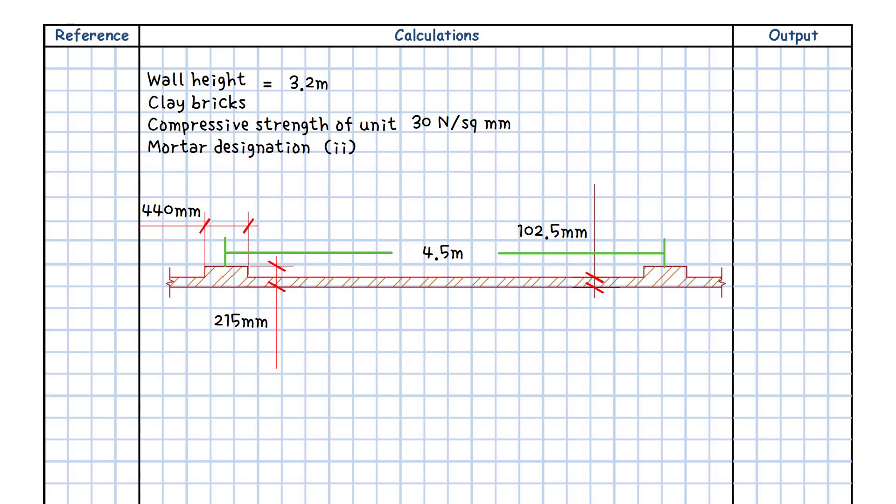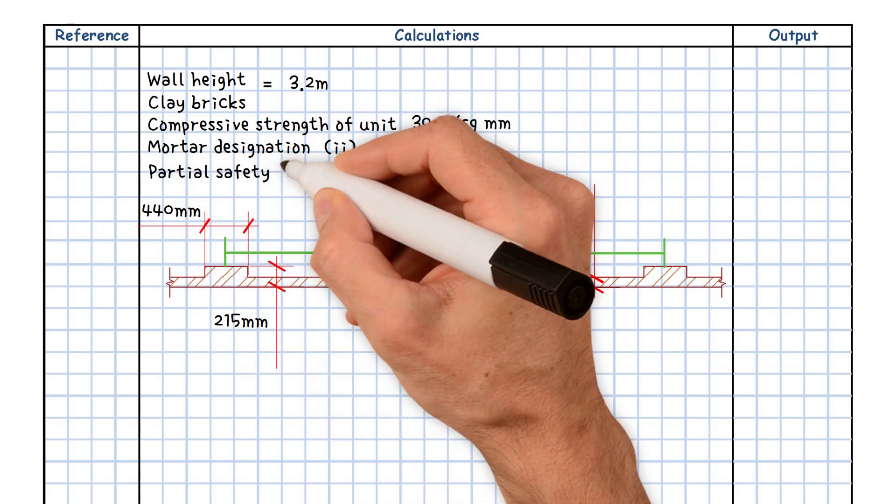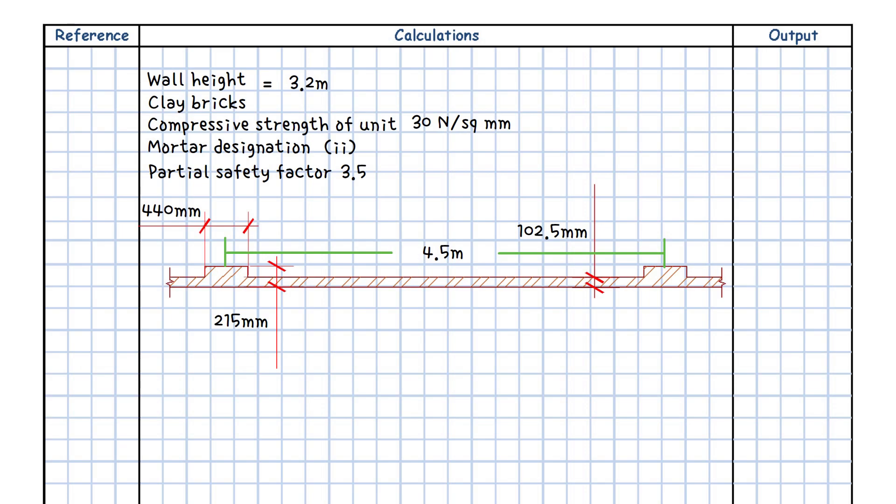We need to calculate the ultimate vertical load stress capacity of the wall, assuming the partial safety factor for materials is 3.5, and the resistance to lateral loading is simple.